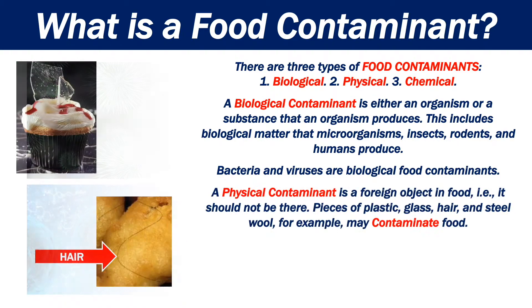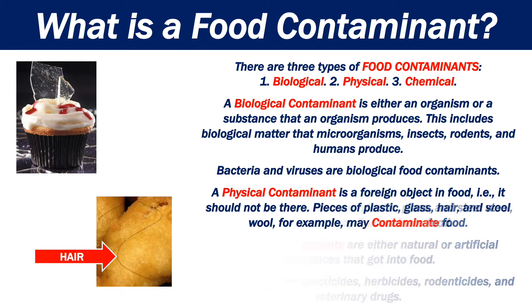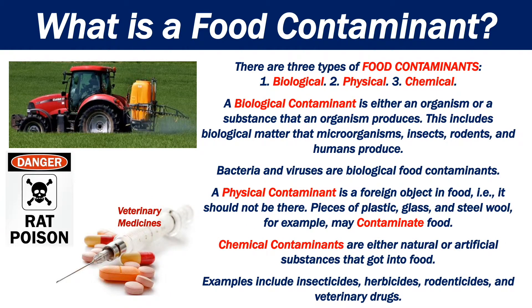A physical contaminant is a foreign object in food — i.e., it should not be there. Pieces of plastic, glass, hair, and steel, for example, may contaminate food. Chemical contaminants are either natural or artificial substances that got into food. Examples include insecticides, herbicides, and veterinary drugs.